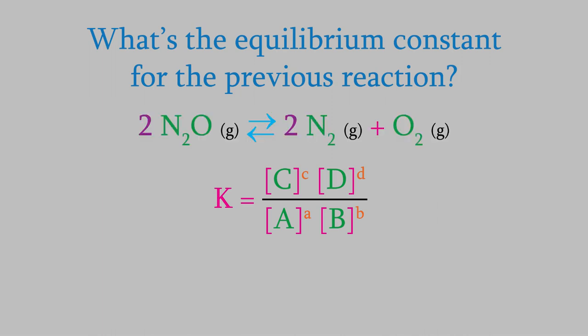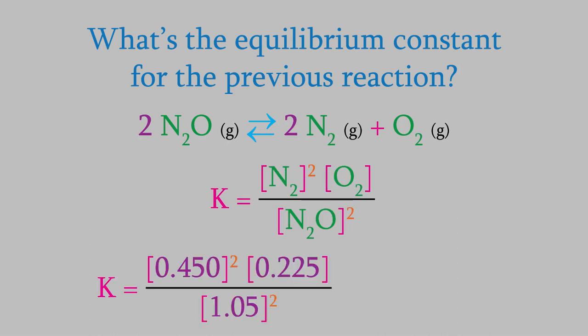In this example, our equilibrium expression would be this. To find K, we just plug in the concentrations. Notice that we want the equilibrium concentrations in this formula, not the initial concentration. When we perform the calculation, we find that K is 0.0413.